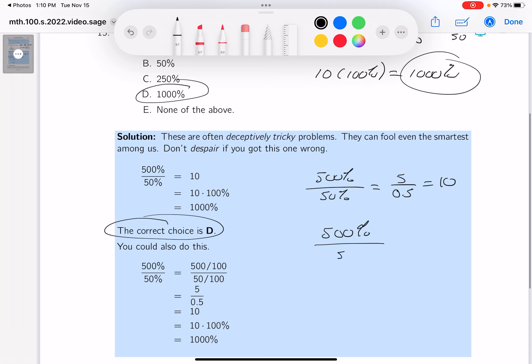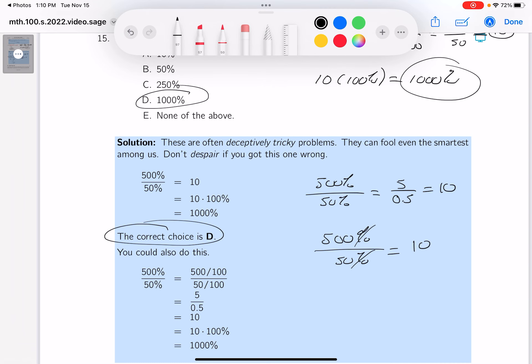Another way to do this is to think of percent as being a unit, and percent just cancels out. 500 by 50 is 10, and again it's always going to be 10. But they want to know the percentage, so 10 times 100% is going to be 1000%.